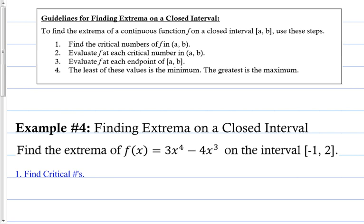Guidelines for finding extrema on a closed interval: to find the extrema of a continuous function f on a closed interval [a, b], use these steps. One, find the critical numbers of f in the open interval (a, b). Two, evaluate f at each critical number. Three, evaluate f at each endpoint of the closed interval [a, b]. The critical numbers will not be the endpoints — that's why it specifies the open interval. Then compare all values: whichever is biggest is the maximum, whichever is smallest is the minimum.